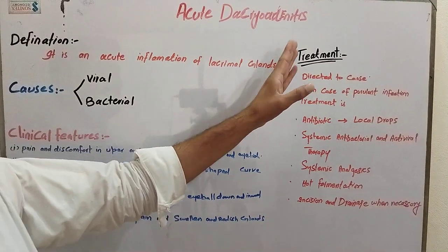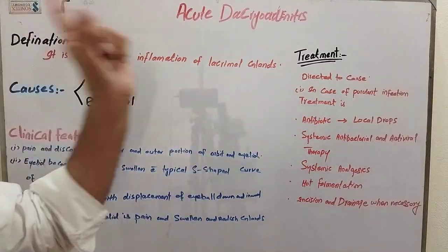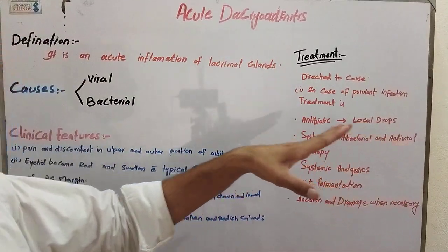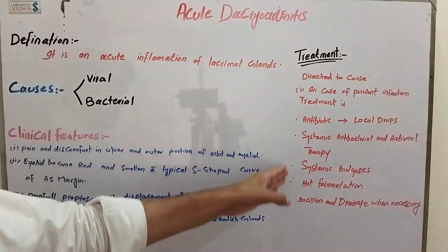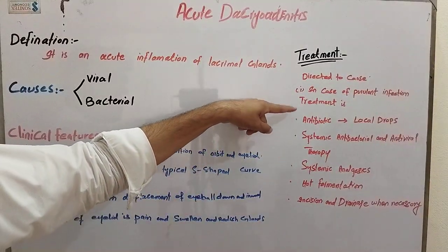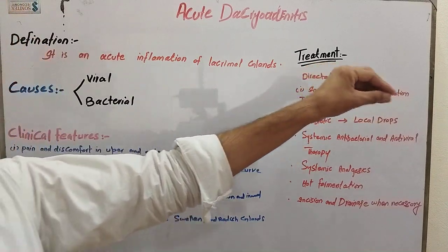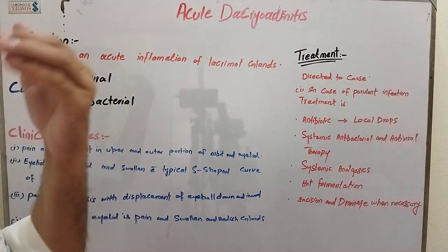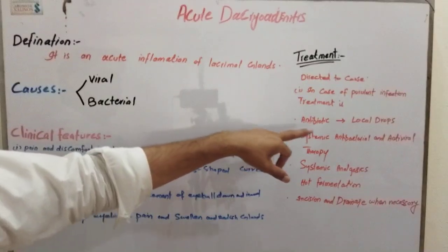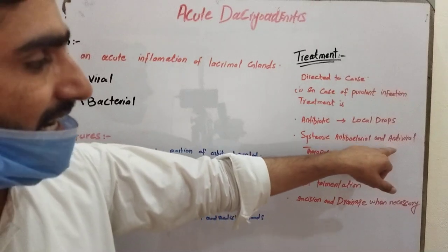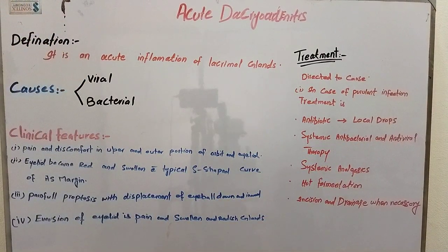Now, what is the treatment? Treatment is always directed to the cause. In the case of bacterial infection, treatment is antibiotics given as local drops. Number two, systemic antibacterial or antiviral therapy, which can be provided in the form of tablets or injections.